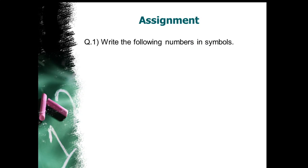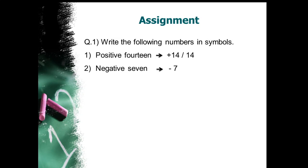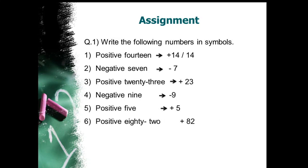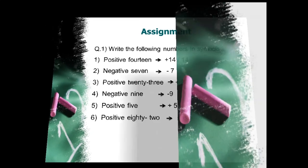Write the following numbers in symbols. Positive 14 is written as plus 14, or you can just write 14. Negative 7 is written as minus 7. Positive 23 is written as plus 23. Negative 9 is written as minus 9. Positive 5 is written as plus 5. Positive 82 is written as plus 82.